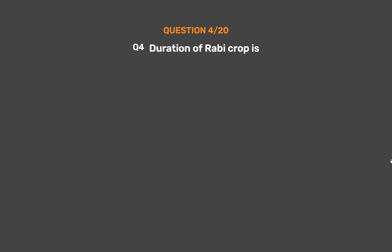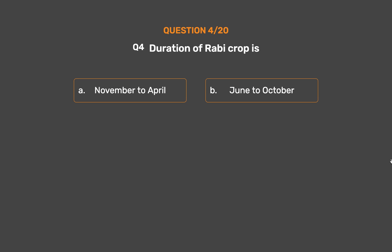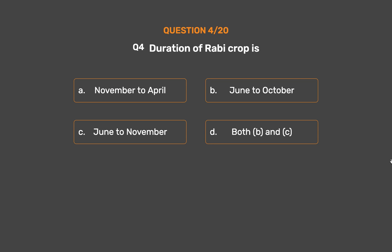Question No. 4. Duration of Rabi crop is — Option A: November to April. Option B: June to October. Option C: June to November. Option D: Both B and C.